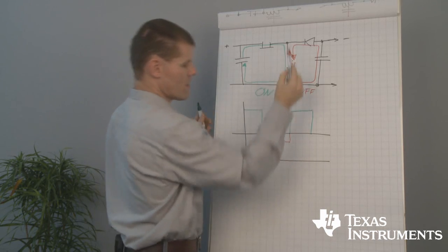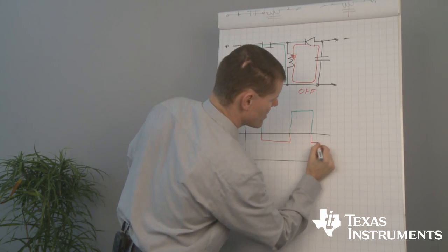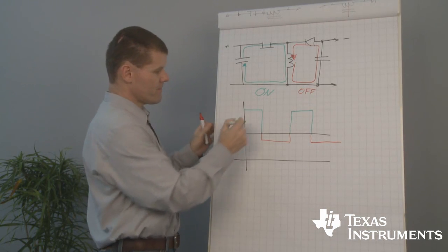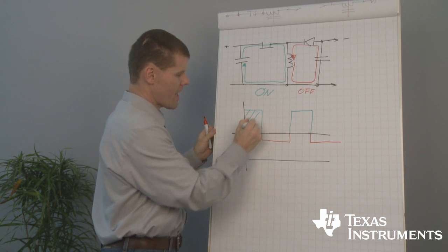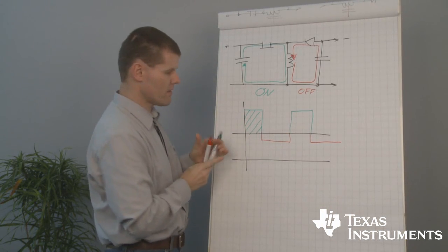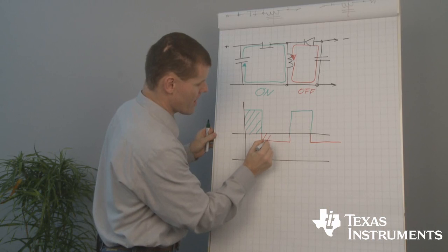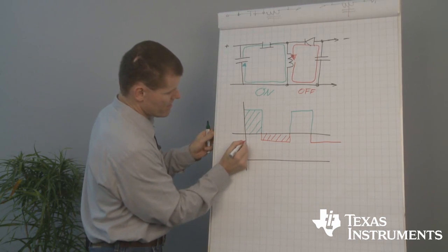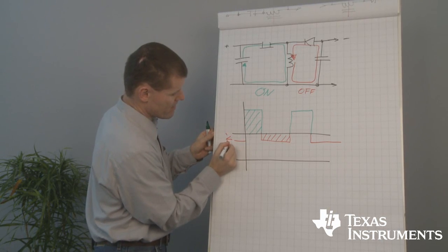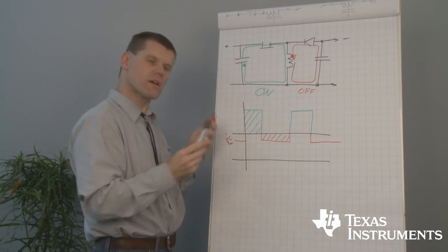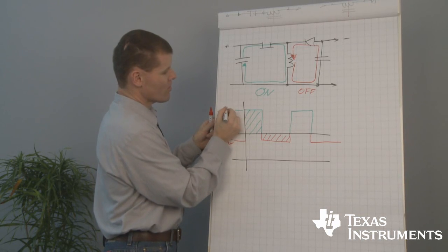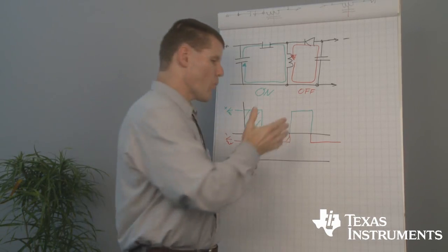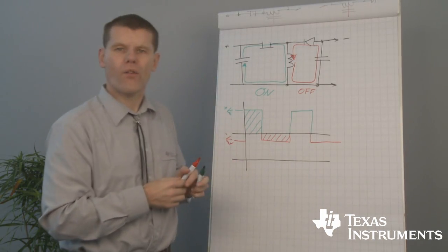When the switch opens, roughly the output voltage will be at our switch node. And very simply, this area has to fit into this area. That's our minus V-out, and that's our plus V-in. These are the basic waveforms of our inverter.